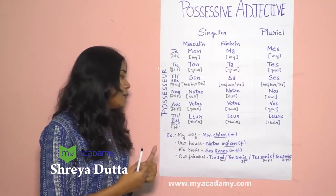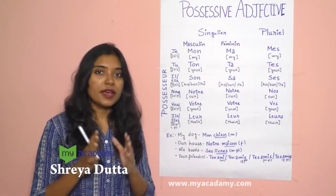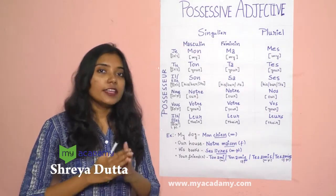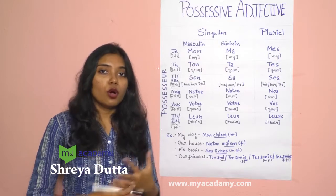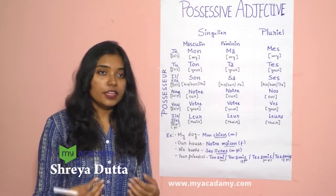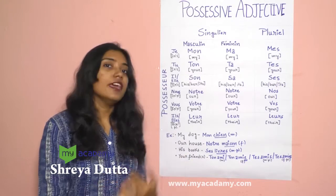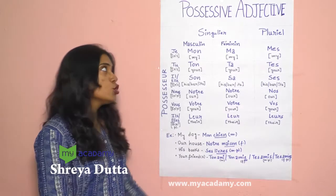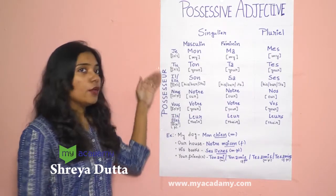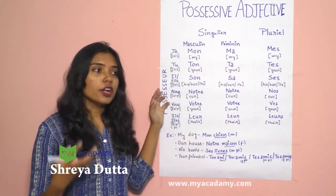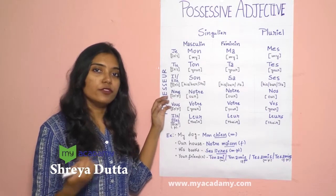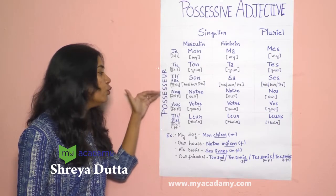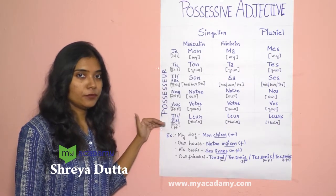Third person plural masculine is ils, meaning they. For a feminine group, it is elles — that is, L with an S. So the subject pronouns or possesseurs we have are: je, tu, il, elle, nous, vous, ils, elles.